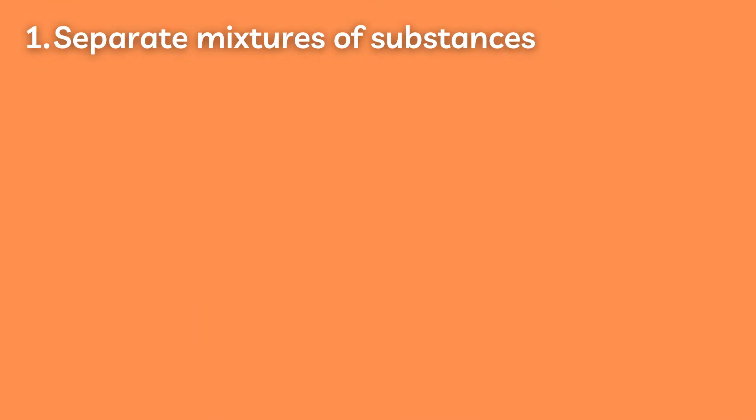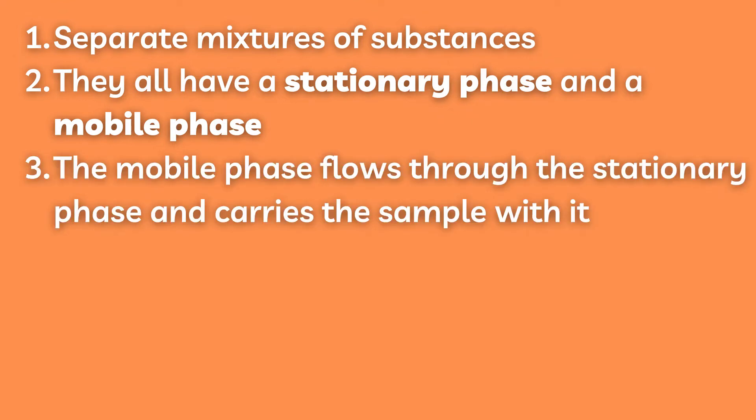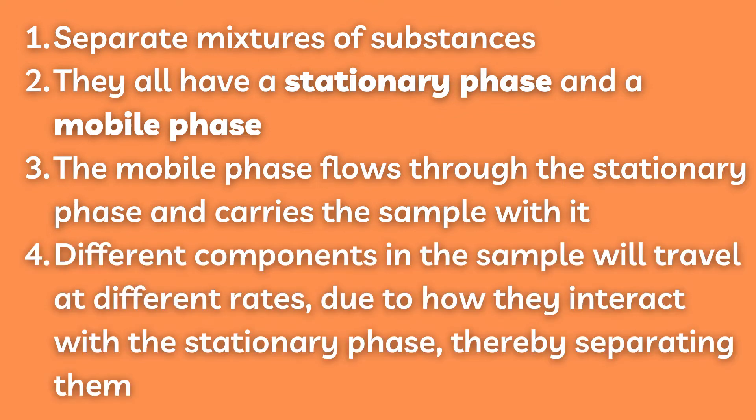First, they separate mixtures of substances into their constituent components. Second, they all have a stationary phase and a mobile phase. Third, the mobile phase flows through the stationary phase and carries the sample with it. Fourth, different components in the sample will travel at different rates due to how they interact with the stationary phase, thereby separating them.